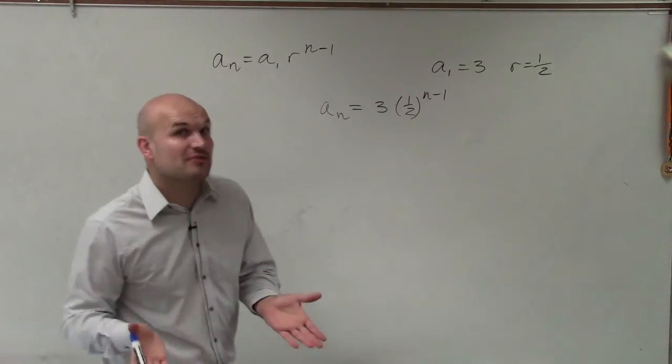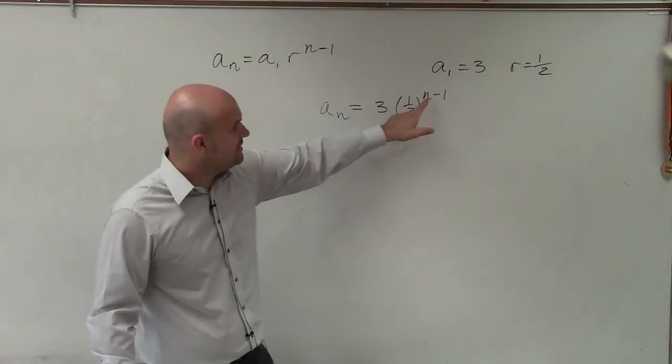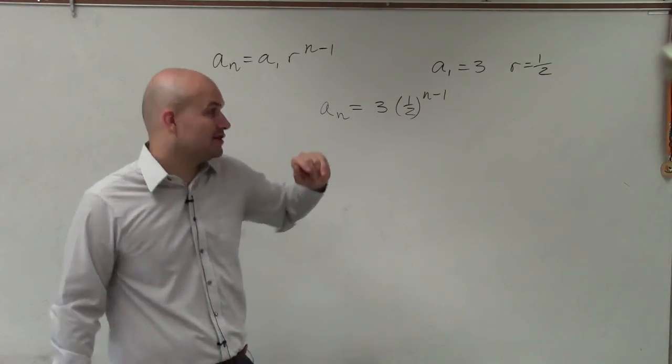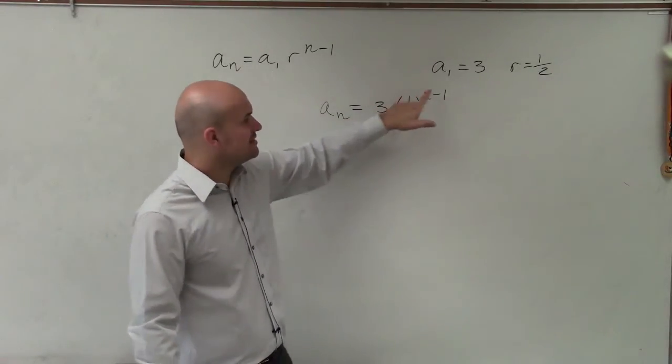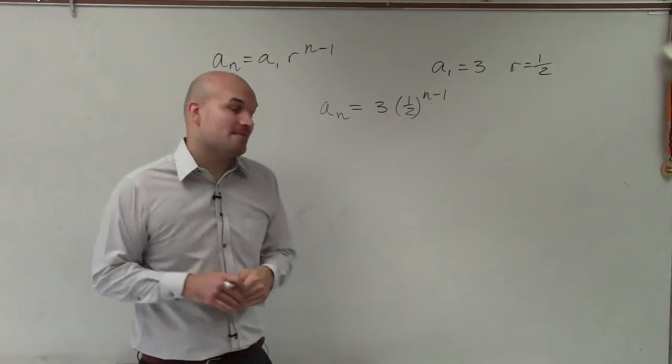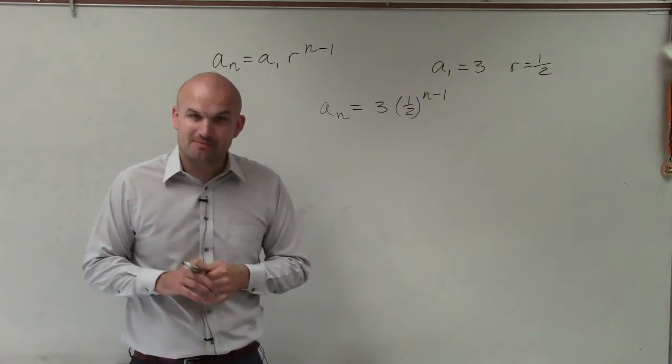Therefore, if I want to find the 10th term in the sequence, I would just plug 10 in for n. If I wanted to find the 3,000th term, I would just plug in 3,000 in for n. So there you go, ladies and gentlemen. That is how you find the nth rule of a geometric sequence. Thanks.